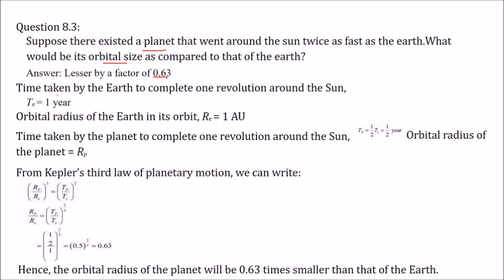Pehle cheez: jo time liya gaya earth dwara ek poora revolution sun ke around complete karne ke liye, woh hota hai ek saal — TE = 1 year. Jo orbital radius hai earth ka uski khud ki orbit mein woh hai RE. Ab jo time liya gaya us planet dwara ek revolution complete karne ke liye: uski speed twice hai, matlab agar yeh ek year mein sun complete kar raha hai, toh yeh aadhe time mein complete karega — TP = TE/2.